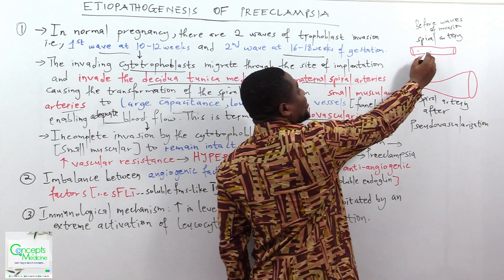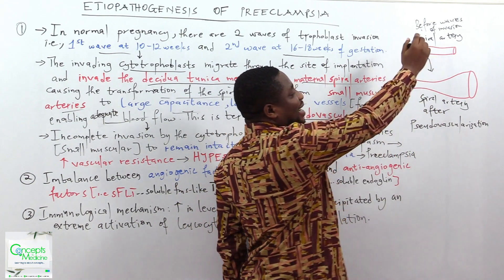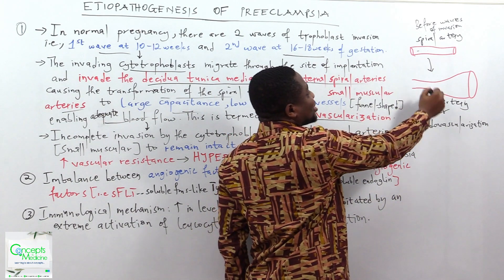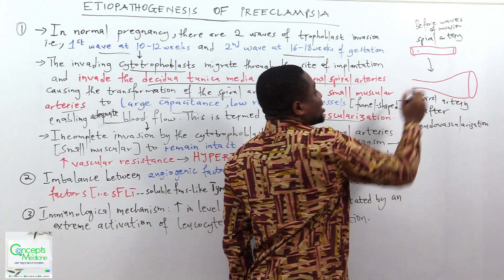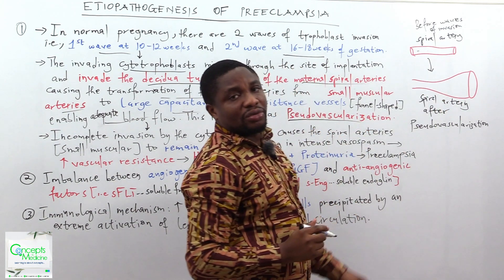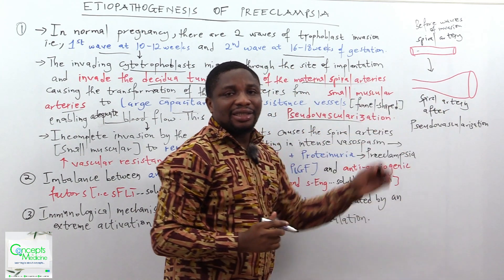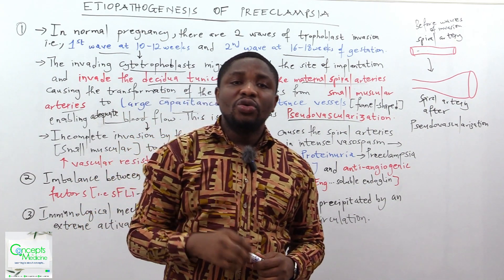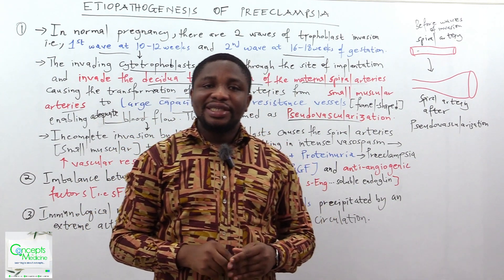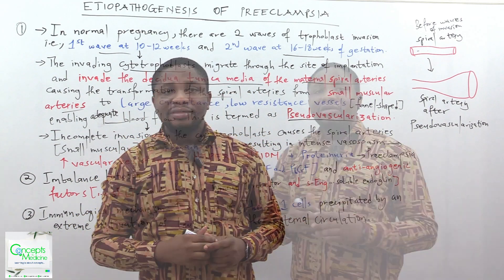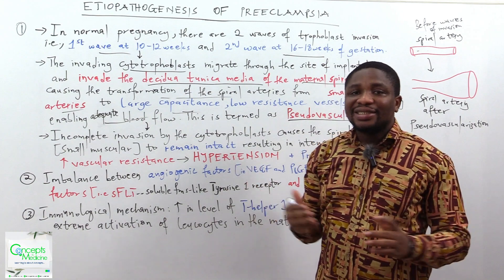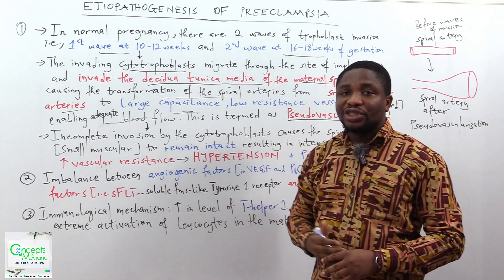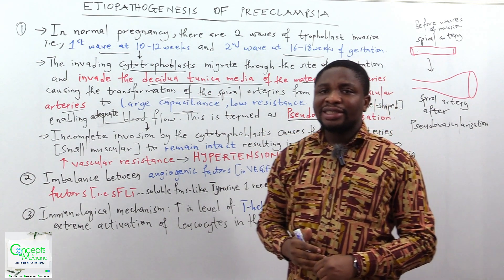In the small muscular form, the resistance is very high. But in the large capacitance form, the resistance is very low. That is brought about by pseudo-vascularization, which represents the normal physiology in pregnancy.